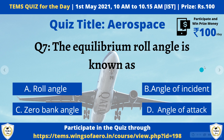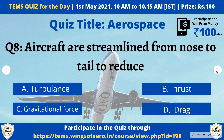Question 8: Aircraft are streamlined from nose to tail — for what purpose? To reduce turbulence? To reduce thrust? To reduce gravitational force? Or to reduce drag? Which is the correct answer? If you want to participate, do so through our Temps Arrow Indian digital learning platform.